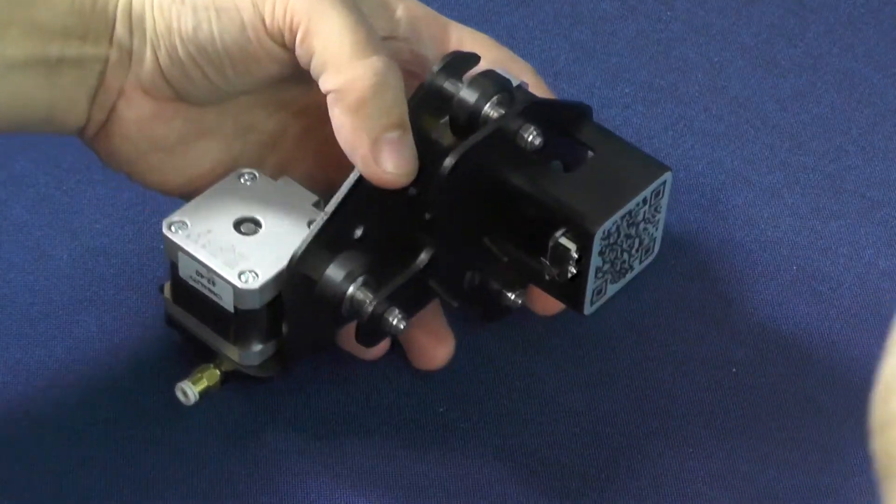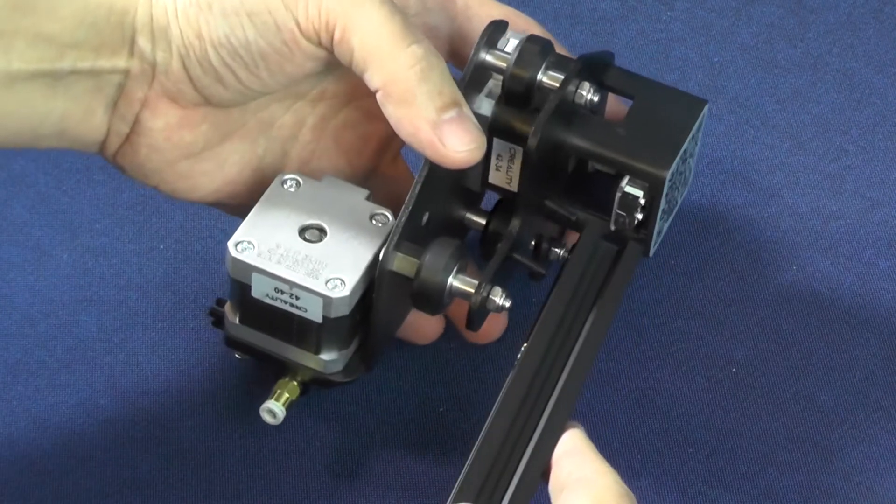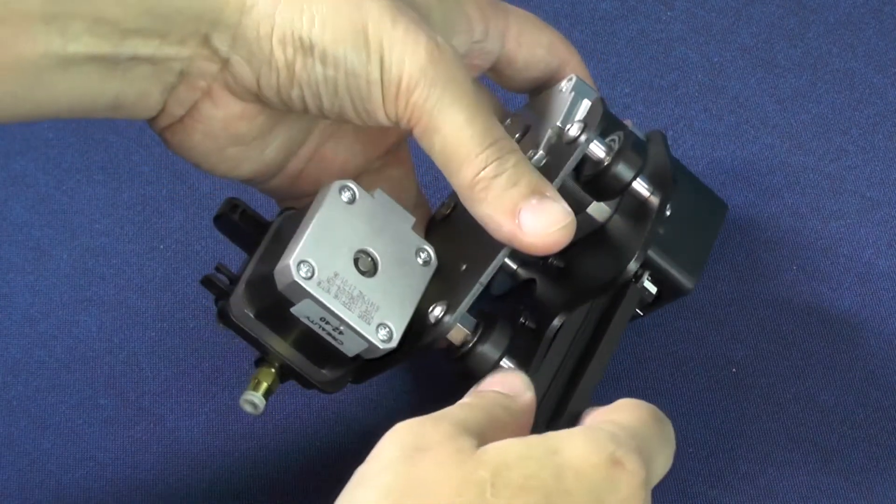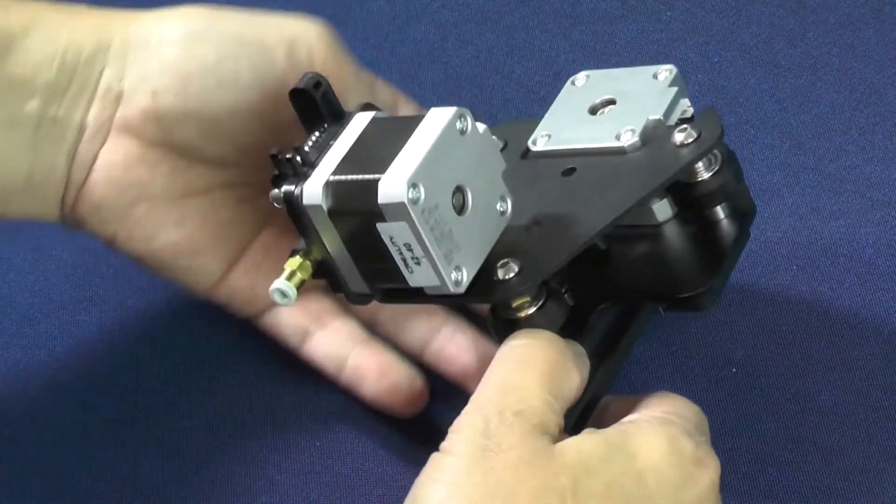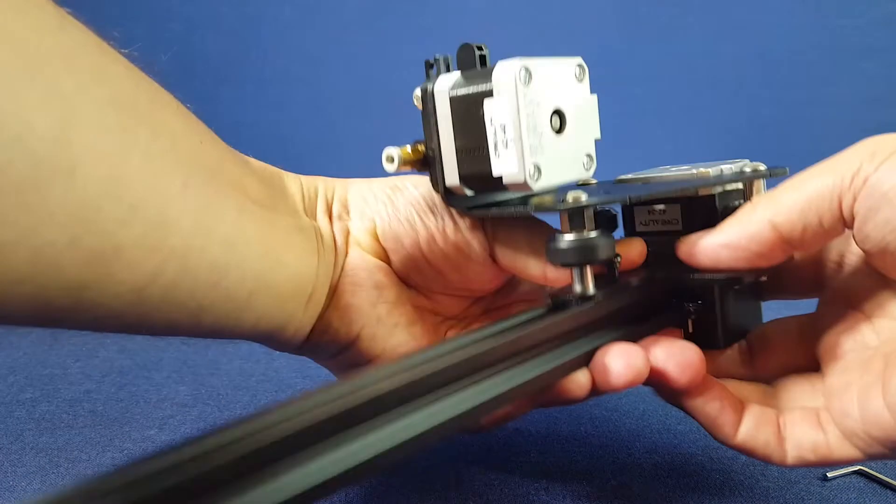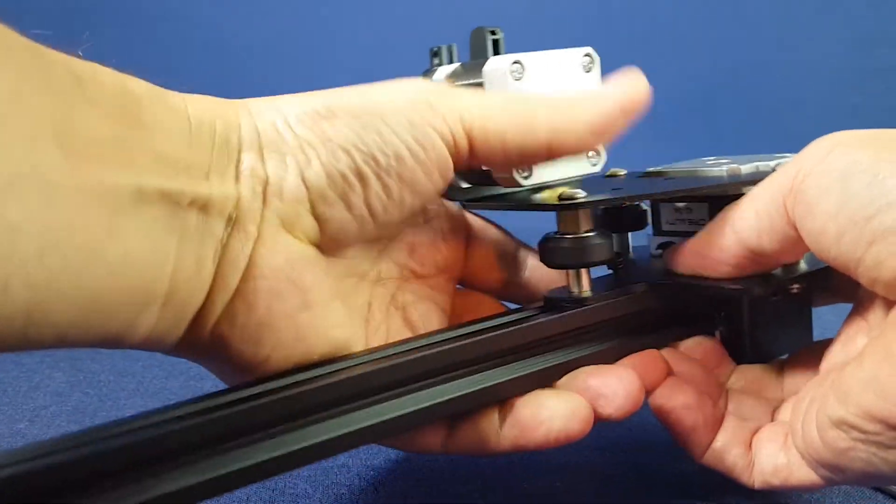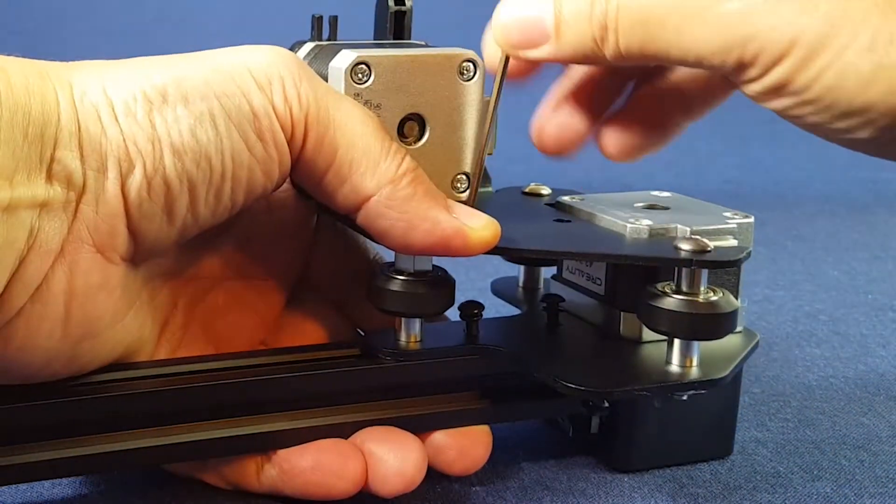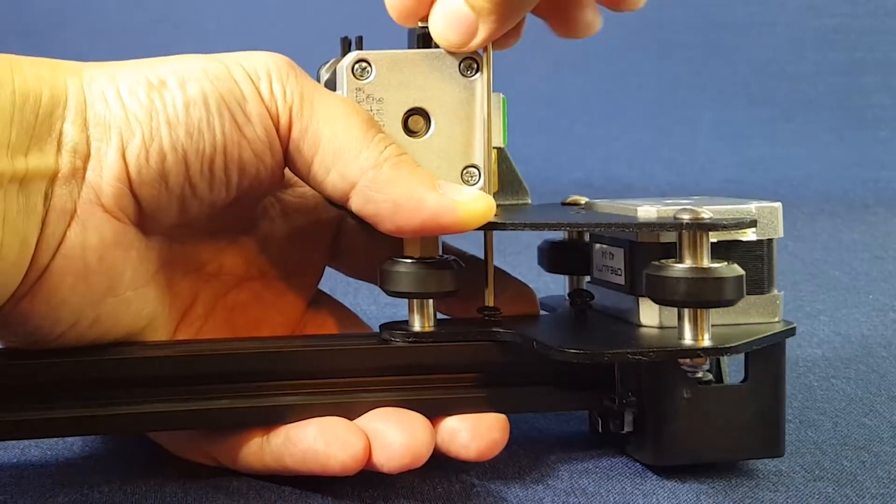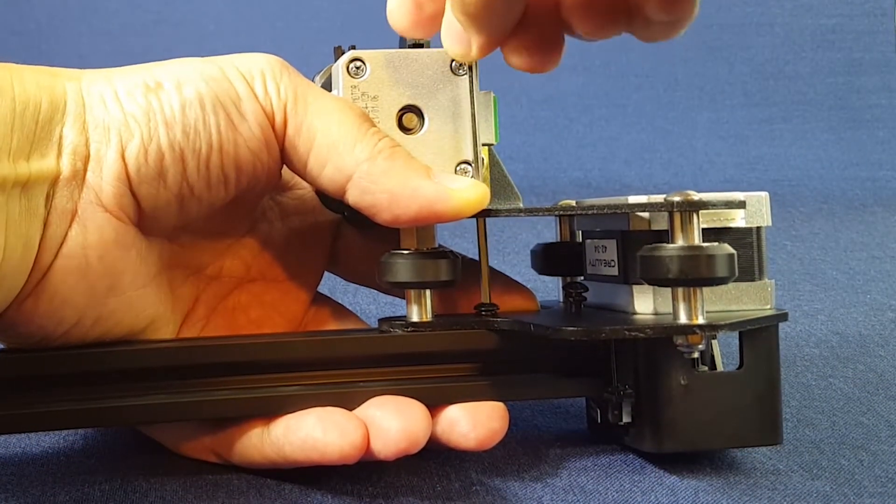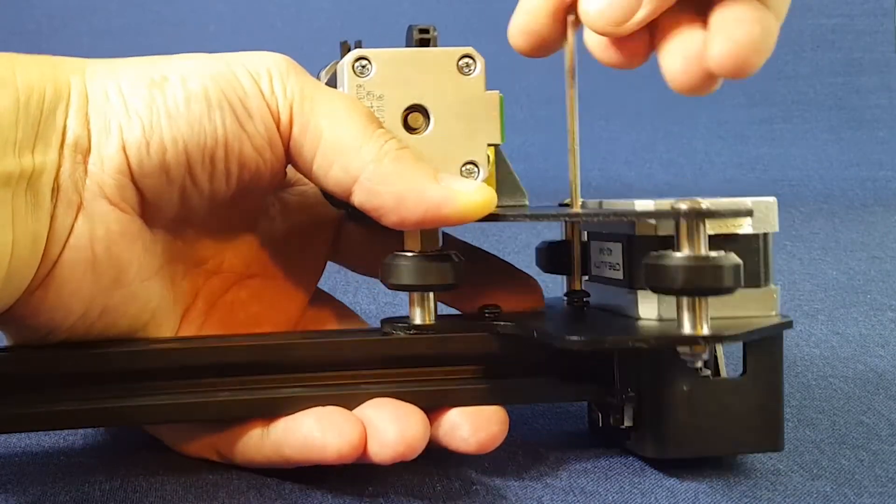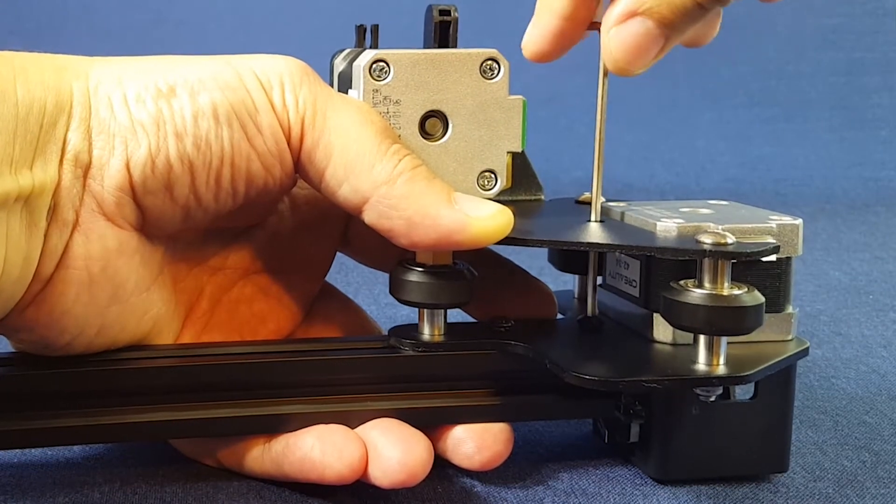Now, put the part of the aluminum extrusion that has this recess on top of the nut, like so. Now is coming a very important step of this procedure. You don't need to tighten this screw much, but you should tighten this other screw pretty well.